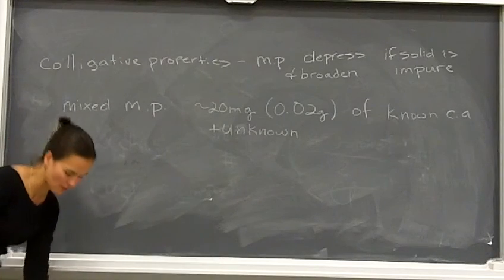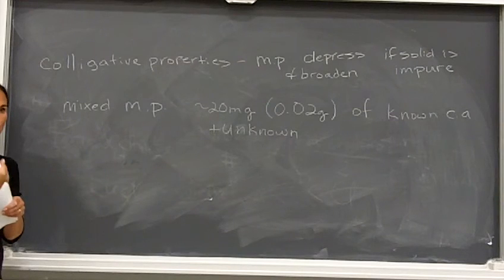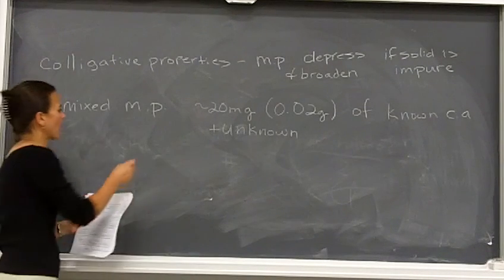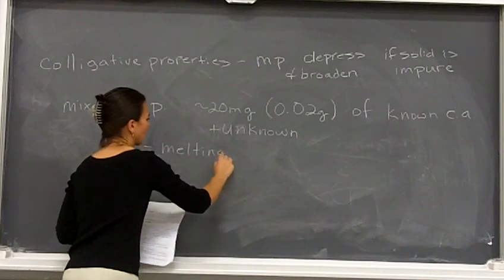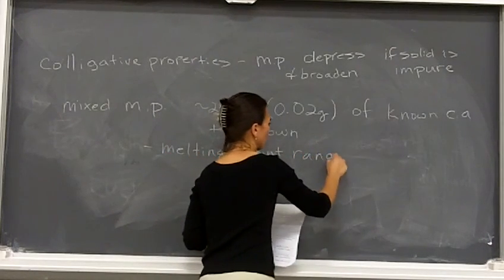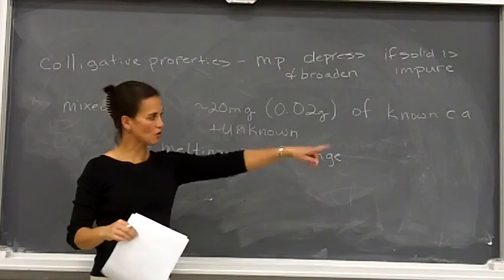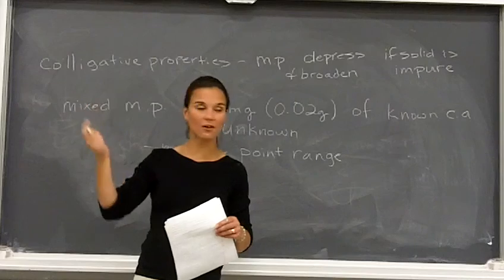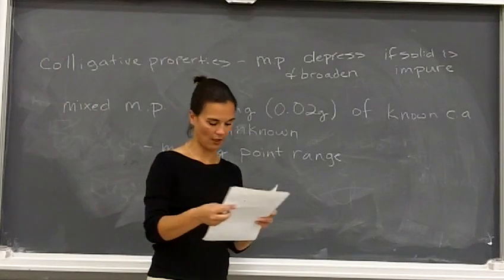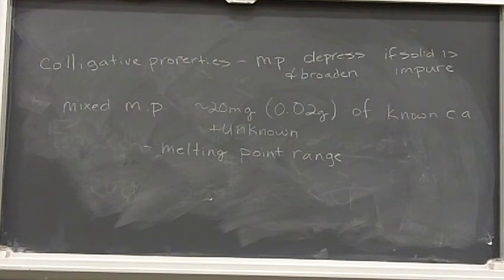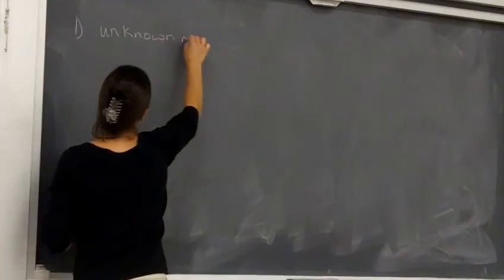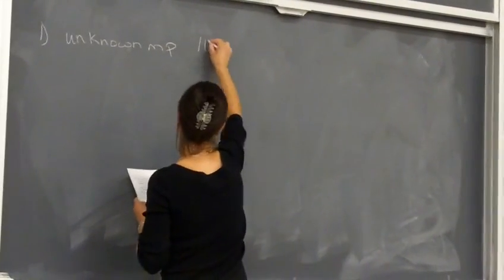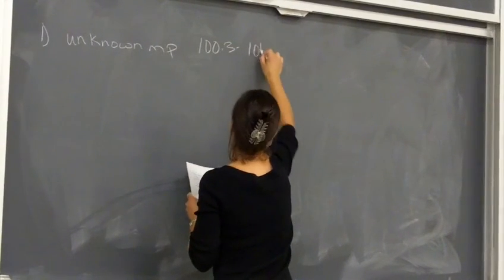Mix the two together, and hopefully when you take the mixed melting point it's the same as your slow melting point. If it's not, then it's probably going to depress and broaden. For the mixed melting point, use about 20 milligrams — that's 0.02 grams — of the known carboxylic acid plus 20 milligrams of your unknown. Use the same amount of each; it's really important to keep them equal. You want to really crush them together with your stir rod so that you've got them well mixed before taking the melting point.